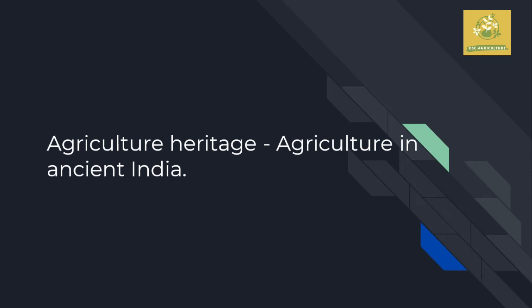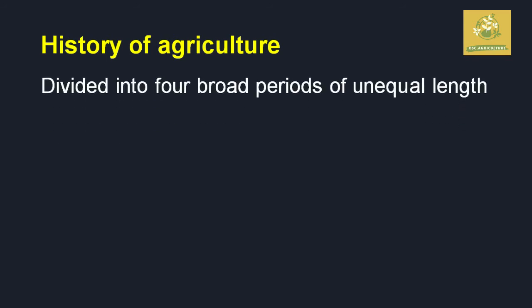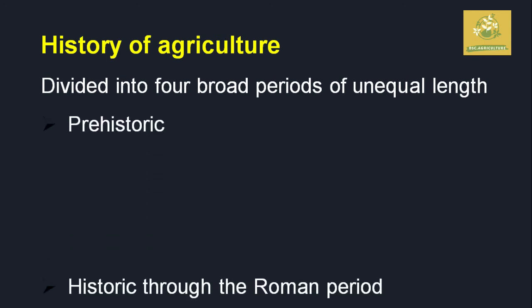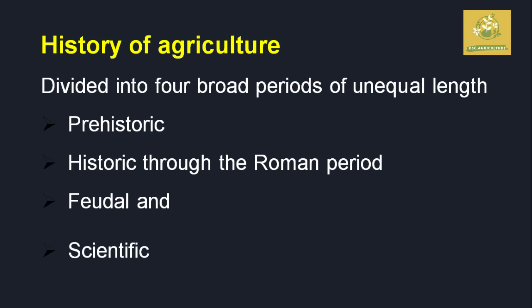The topic is agricultural heritage and agriculture in ancient India. Agricultural heritage refers to the values and traditional practices adopted in ancient India which are most prevalent to the present day — the techniques adopted in our fields. The history of agriculture can be broadly divided into four periods: prehistoric, historic, the Roman period, the visual period, and the scientific period.